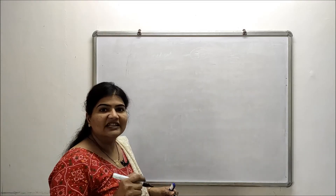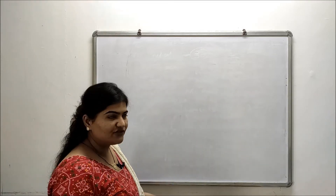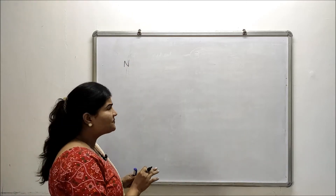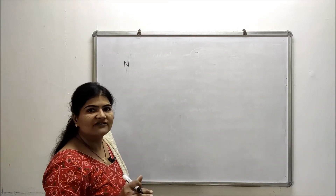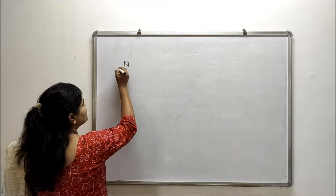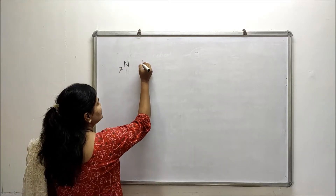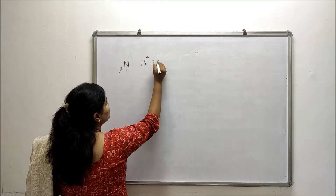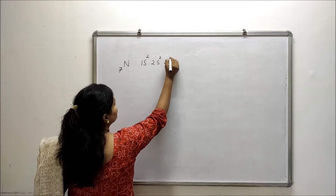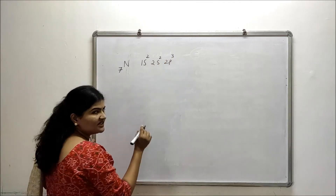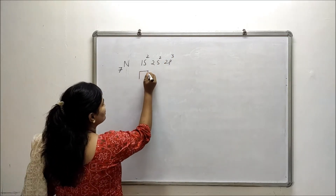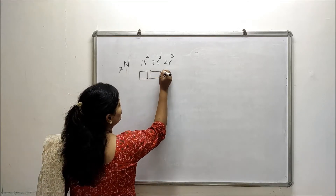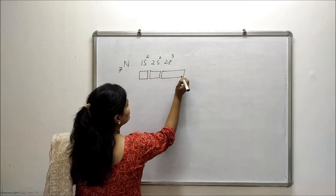Let's start from the electronic configuration of nitrogen, like we usually do for carbon. The atomic number of nitrogen is 7, so the configuration becomes 1s2, 2s2 and 2p3. That gives us 2+2=4, plus 3 equals 7.